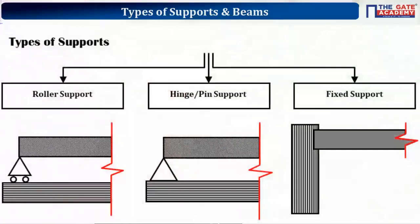To support a beam, we use different types of supports, and the type of support is very, very important. The way the beam bends is primarily dependent on the types of supports used. Applying the same load on beams with different supports will cause different ways of bending.